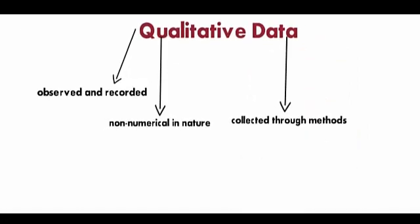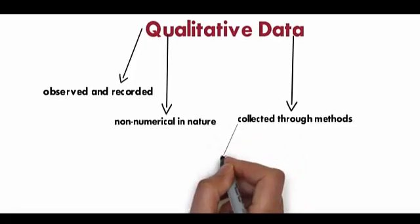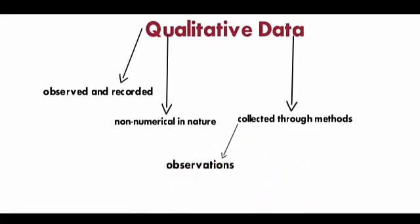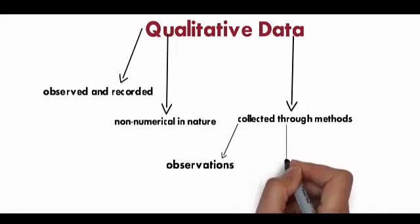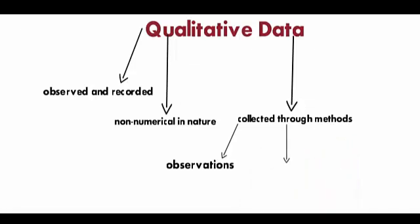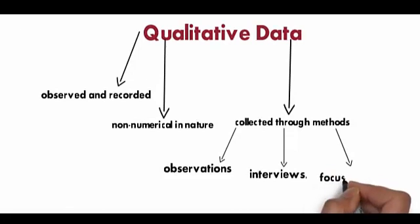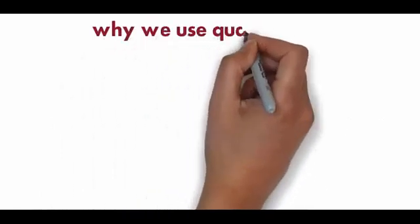This type of data is collected through methods of observations, one-to-one interviews, conducting focus groups, and similar methods. Qualitative data in statistics is also known as categorical data - data that can be arranged categorically based on the attributes and properties of a thing or phenomenon.